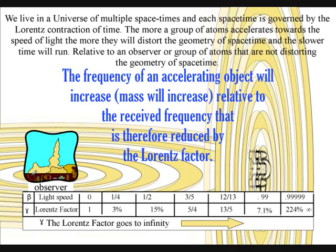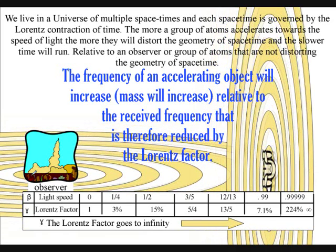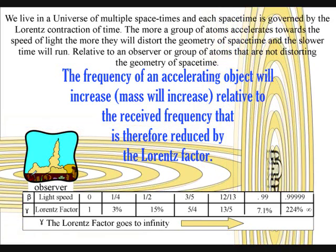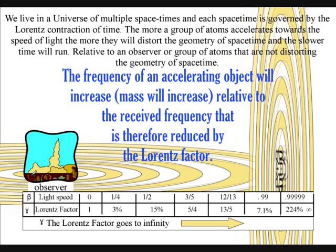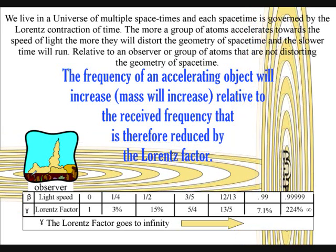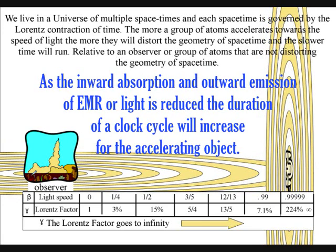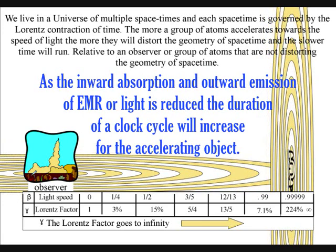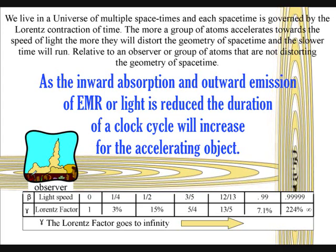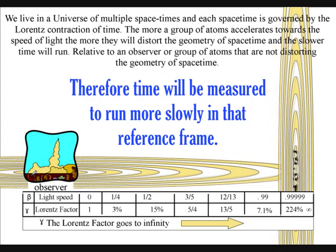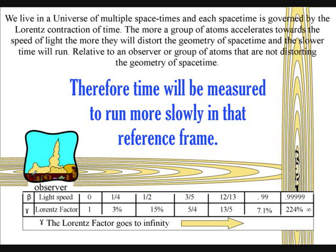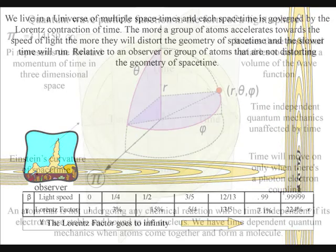The higher the frequency, the frequency of an accelerating object will increase relative to the received frequency, and is therefore reduced by the Lorentz factor. As the inward absorption and outward emission of electromagnetic radiation is reduced, the duration of a clock cycle will increase for the accelerating object, and time will be measured to run more slowly in that reference frame.